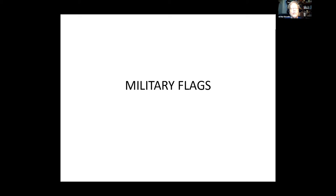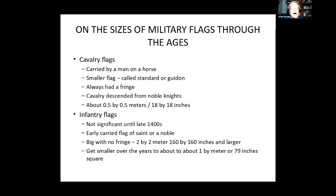Fringes came in through heraldry and into military flags. Armies in the 1500s to 1700s were divided into cavalry — people on horses — and infantry — people on foot. Cavalry flags carried by a man on a horse tended to be smaller, called standards or guidons, and they almost always had a fringe, indicating descent from noble knights — about half a meter by half a meter. Infantry flags were very uncommon until the late 1400s and 1500s. When they appeared, they were big — two meters by two meters, sometimes larger — to identify people, getting smaller over the years to about one meter by one meter.